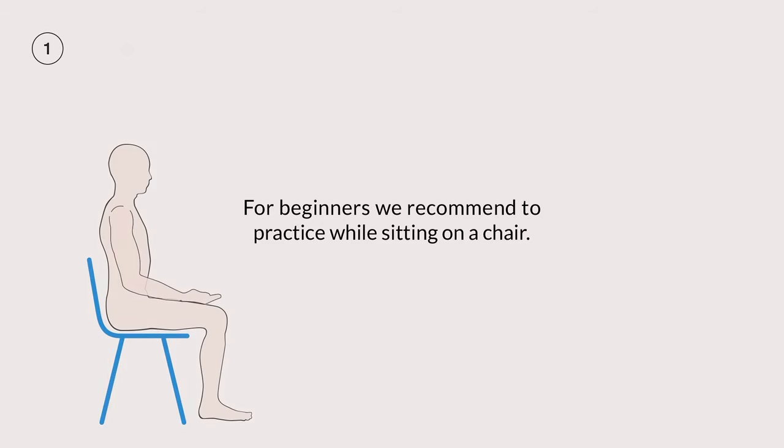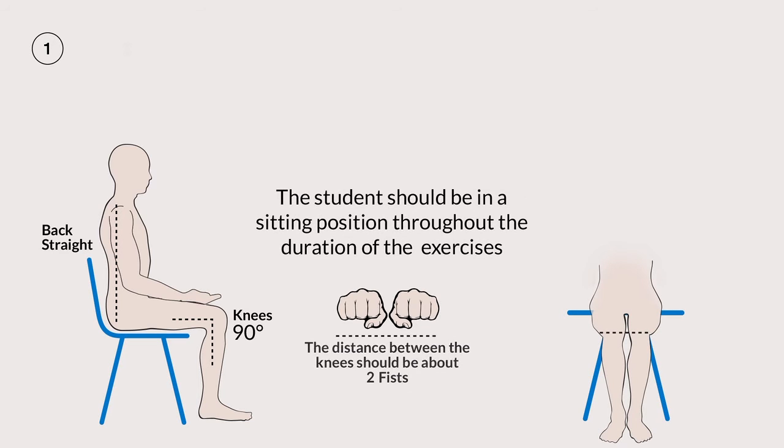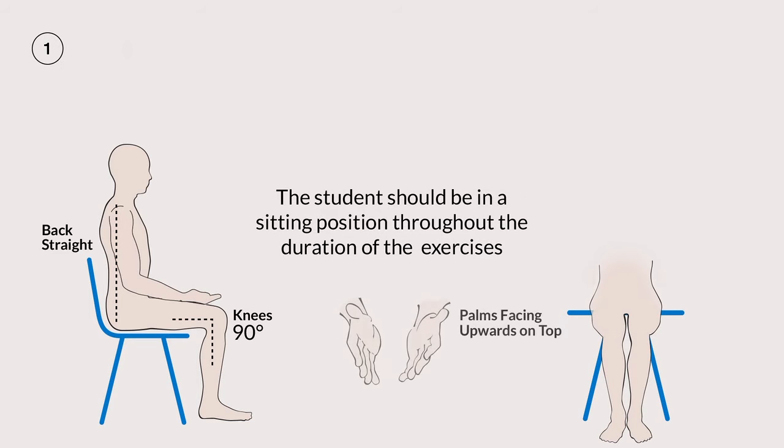The student sitting position: back straight, knees at 90 degrees, the distance between them about two fists, and the hand palms facing upwards on top.